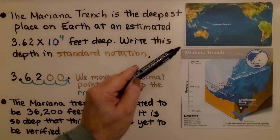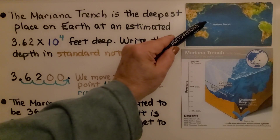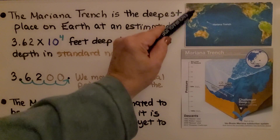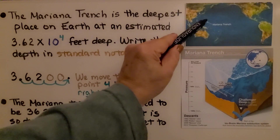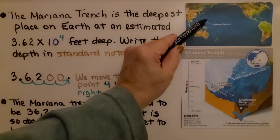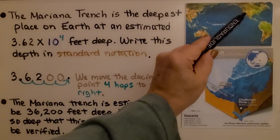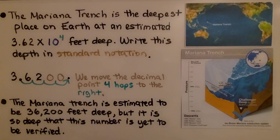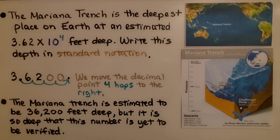On a world map, the Mariana Trench is located here — near Asia, China, and close to Guam, with Australia nearby and the U.S., California, and South America also shown. The Challenger Deep is the name of the deepest section of the Mariana Trench. There's a link in the video's description if you want to find out more information about the Mariana Trench.